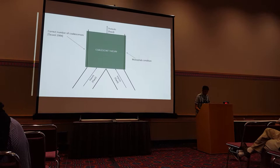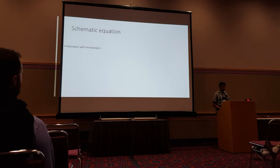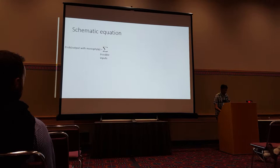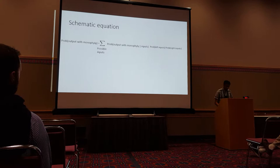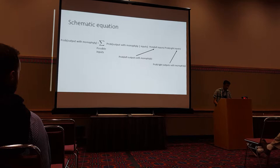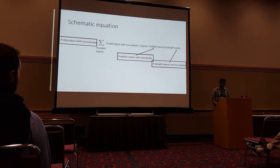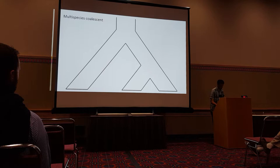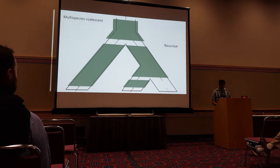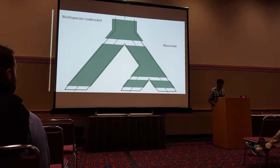Schematically, the probability of the output of a particular node with the monophyly you care about equals the sum over all possible inputs into that node of the probability of the output given the inputs, times the probability of the inputs. The inputs into your node are just outputs of nodes further down the tree, so you can substitute and get a recursion. To apply this recursion to a particular species tree, you start at the root, work your way down to the leaves — the base case of the recursion — and then construct your result for the probability of monophyly.